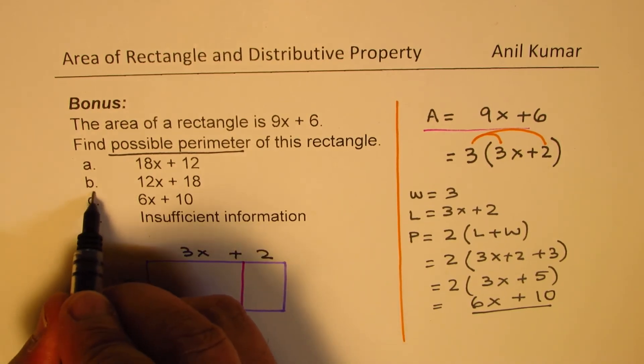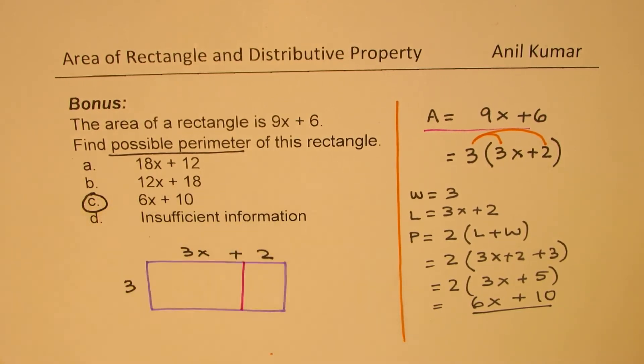Among the options given, C is the option which matches. Do you see that? So that's how we can correlate area of a rectangle with its perimeter, even when we have polynomials as shown in this example.